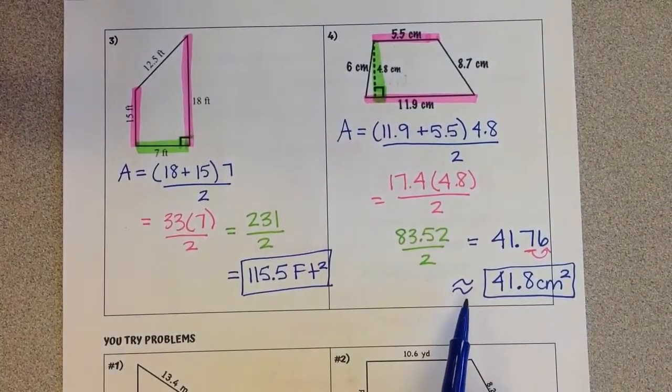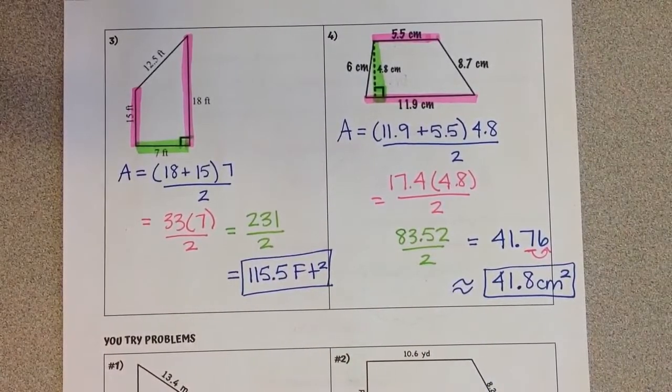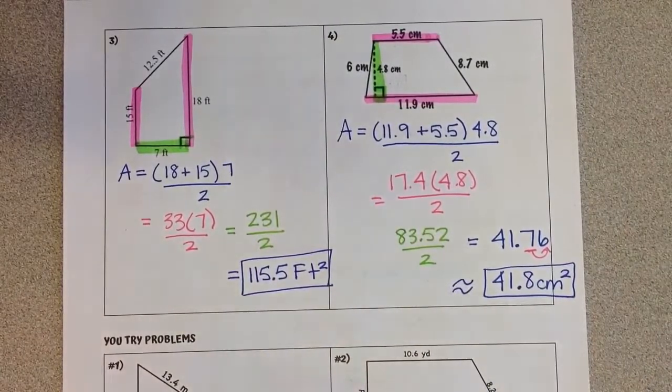I'm going to put a squiggly equal sign there, that means it's about that, that means that we rounded our answer. Go ahead and try number 1 and 2 on your own.